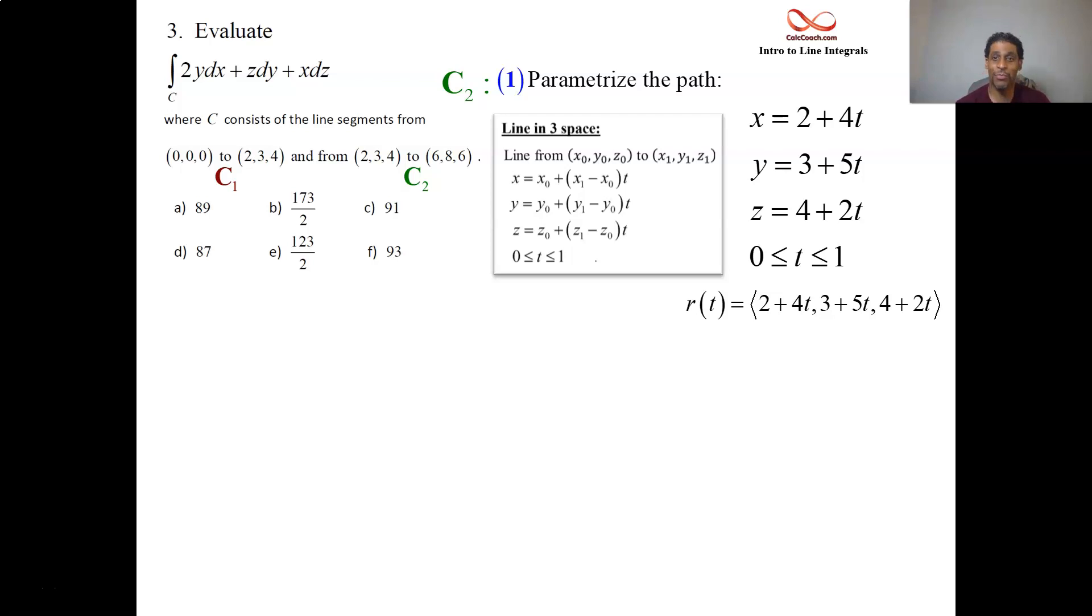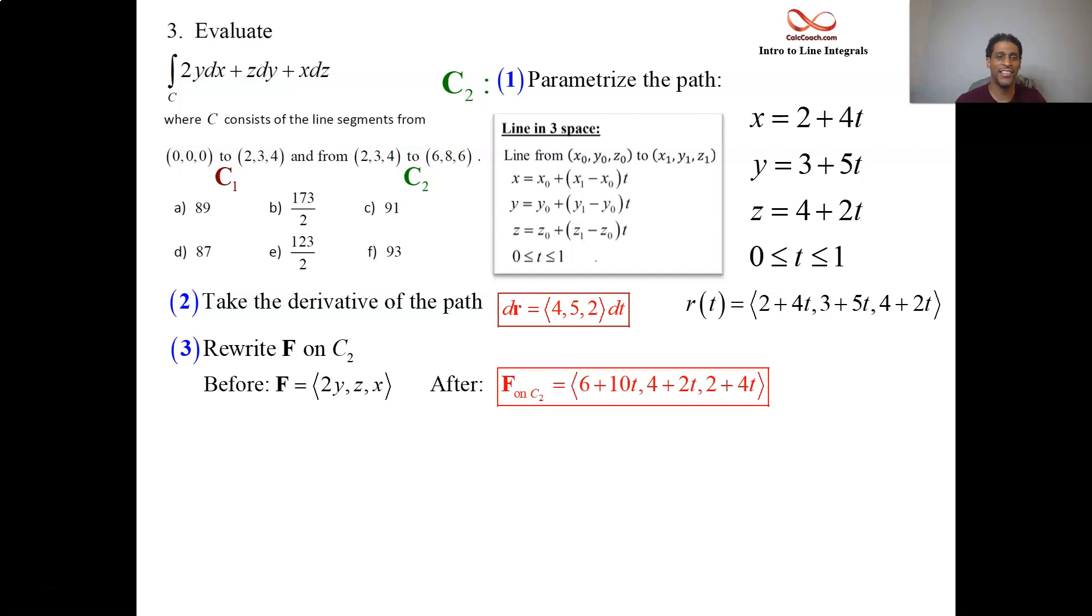You're on to step 2 now. Take the derivative of this path, which is just going to be the (4,5,2) dt. We're halfway done with the dot product. The other half of the dot product comes from F, who was 2y, z, and x. Replace the y with the 3 plus 5t, replace the z with the 4 plus 2t, replace the x with the 2 plus 4t, and dot.